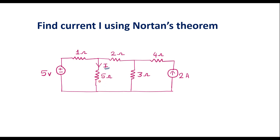As we know in Norton's theorem, we are supposed to find two parameters. One is known as short circuit current represented as ISC, and another one is Norton's resistance represented as Rn. Short circuit current can be calculated as follows: the current I we are supposed to calculate is flowing through the 5 ohm resistor. Let me call this branch AB where the 5 ohm resistor is connected. The first step is we have to remove this 5 ohm resistor from the circuit and short it.